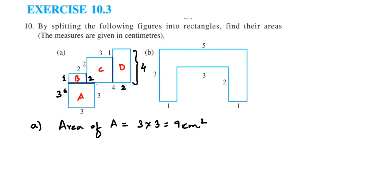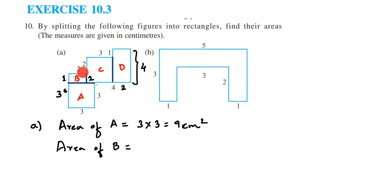For figure A, I confirmed all three sides shown are 3, making it a square. Next, area of B: the length is 2 and breadth is 1, so length times breadth equals 2 × 1 = 2 centimeters squared.